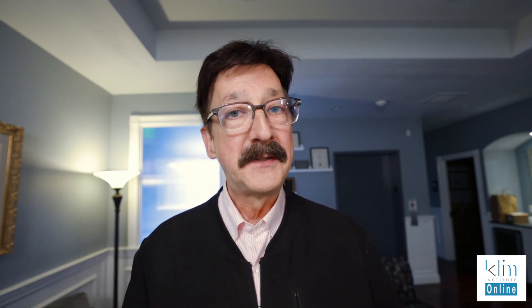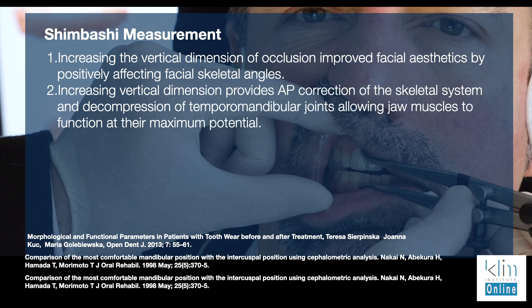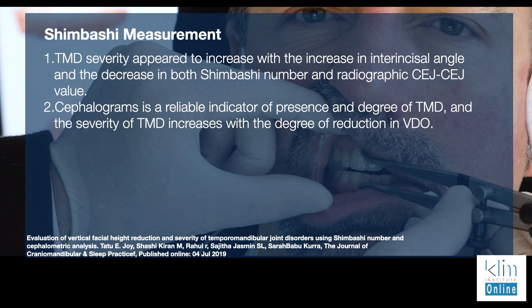We do know that increasing the vertical dimension can improve the skeletal features of the face, and usually it will also improve muscle function. The second thing we're looking at with the Shimbashi measurement: if we have distalized joints — which we call compression — and the joint space is compressed up and back, increasing the vertical dimension will often decompress the TMD joints, allowing the jaw muscles to function at their maximum ideal length.